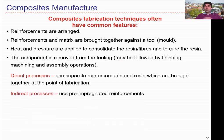In indirect processes, we use pre-impregnated reinforcements — what we call prepregs. These are materials where the resin is already within the reinforcement structure, but the resin is not yet cured. We can store them and use them when needed. When manufacturing, we lay the prepreg within the mold and apply heat and pressure to cure the resin. We must store prepreg materials under certain conditions to avoid premature curing.